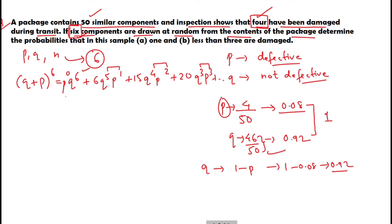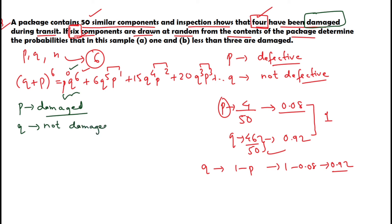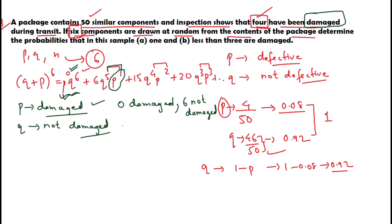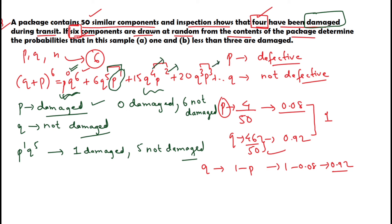Let us understand the meaning of each term. P represents the damaged component and Q represents the not damaged one. The first term has P^0, meaning 0 damaged and 6 not damaged. The second term has P^1, meaning 1 damaged and 5 not damaged. Similarly, P^2 means 2 damaged and 4 not damaged, P^3 means 3 damaged and 3 not damaged — always totaling 6.